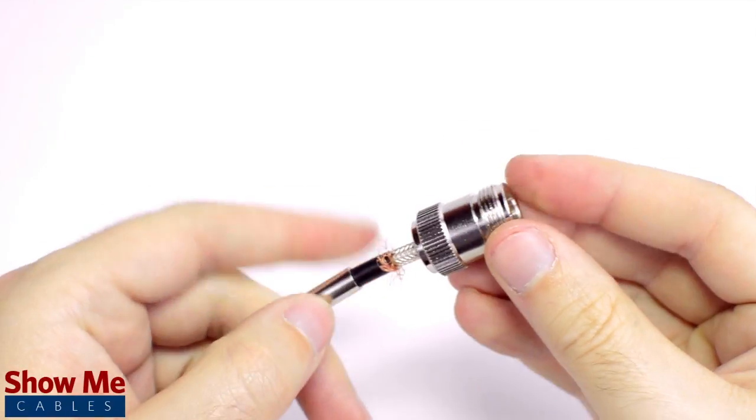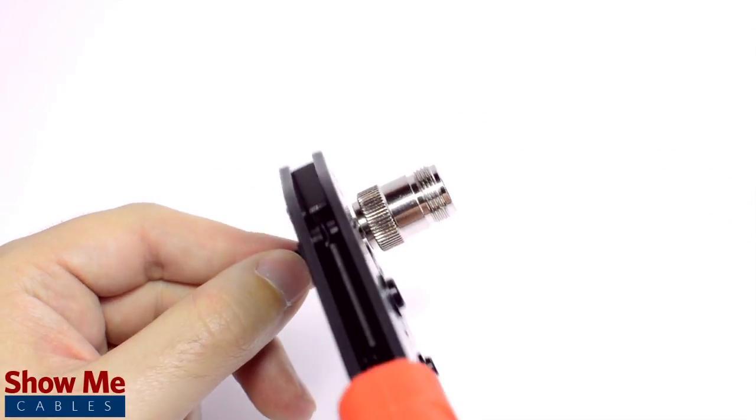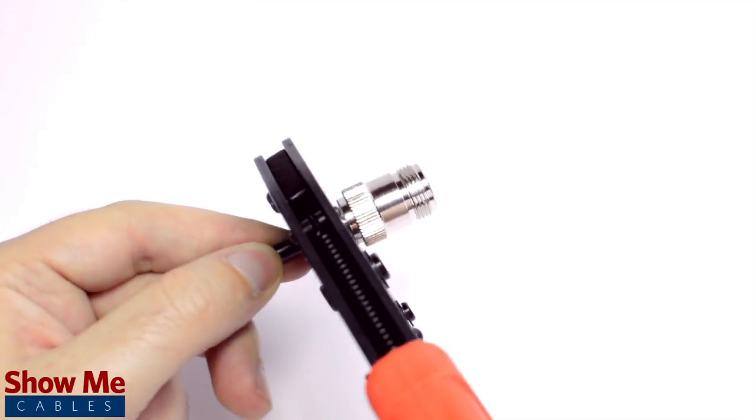Then slide the ferrule up to the base of the connector folding the shield with it. Crimp the ferrule under the outer jacket to complete termination.